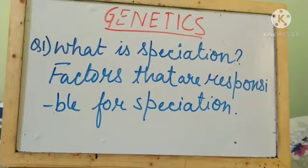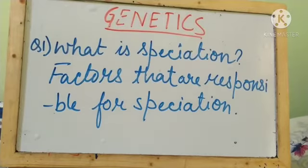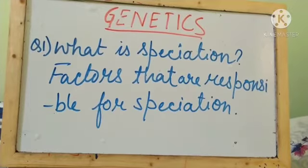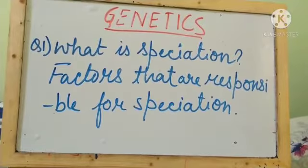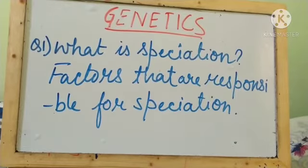In this question we are going to study about what is speciation. Speciation means the formation of a new species from the existing species. If the existing species is still there and due to certain changes that take place in their environment or habitat, those organisms altogether form a new species — that is known as speciation.